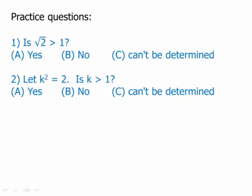Consider these two practice questions — they look similar but have different answers. Number one: is the square root of 2 greater than 1? By printing that radical sign, we by definition mean the positive root only. That positive root is a decimal between 1 and 2, so yes, it is definitely bigger than 1.